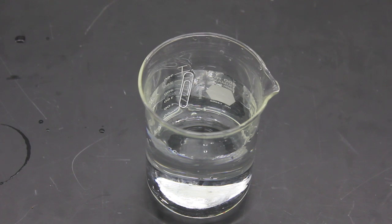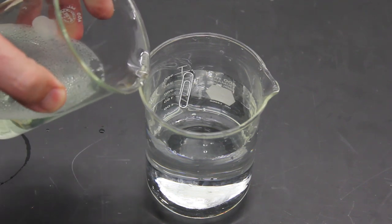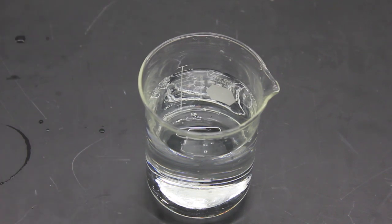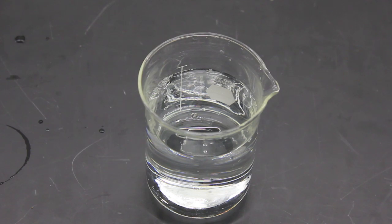To show you that the paperclip really will sink if we break the surface tension, I'm going to add a little bit of soapy water with detergent in it, which will vastly reduce the surface tension of the water, and so it will no longer be able to support the paperclip. And there it goes. So when we remove the effect of the surface tension using detergent, the paperclip does indeed follow Archimedes' principle and sink to the bottom.